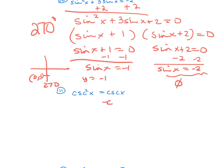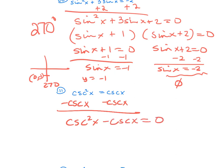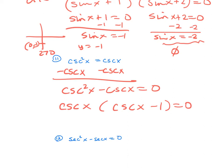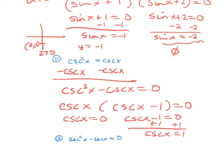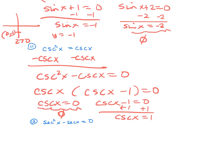Number 11 — I need to move the cosecant over to the other side and factor out a GCF of cosecant. Setting each factor equal to 0: cosecant x equals 0 has no solution because cosecant must be greater than 1 or less than negative 1. For cosecant x equals 1, think of the reciprocal — we're looking for sine of x equals 1. Sine looks at y, so I'm finding where y equals 1, which is at 90 degrees — the only answer.